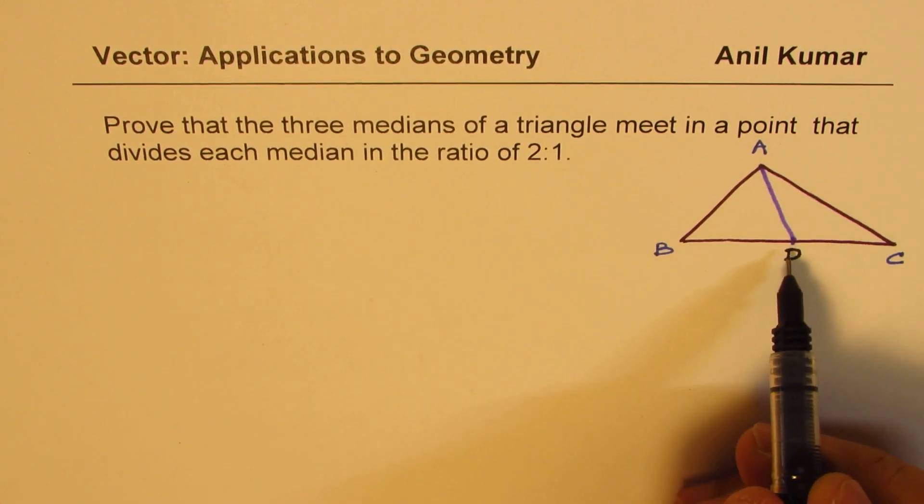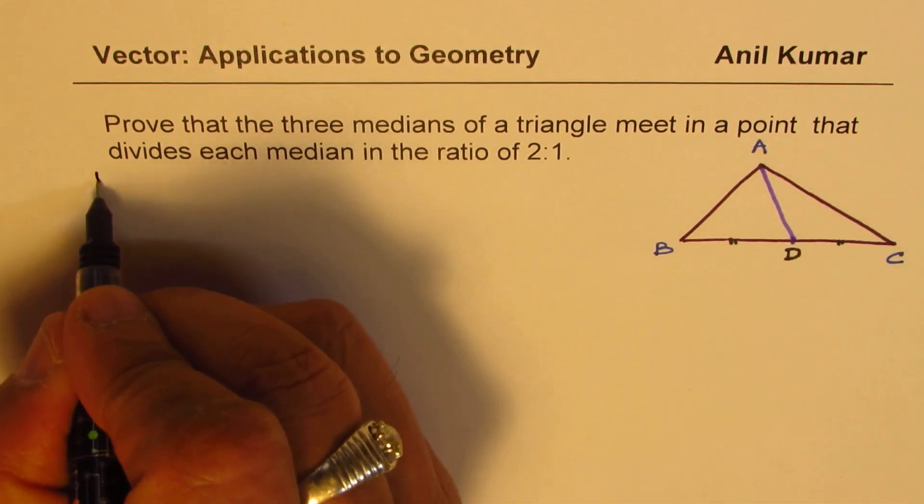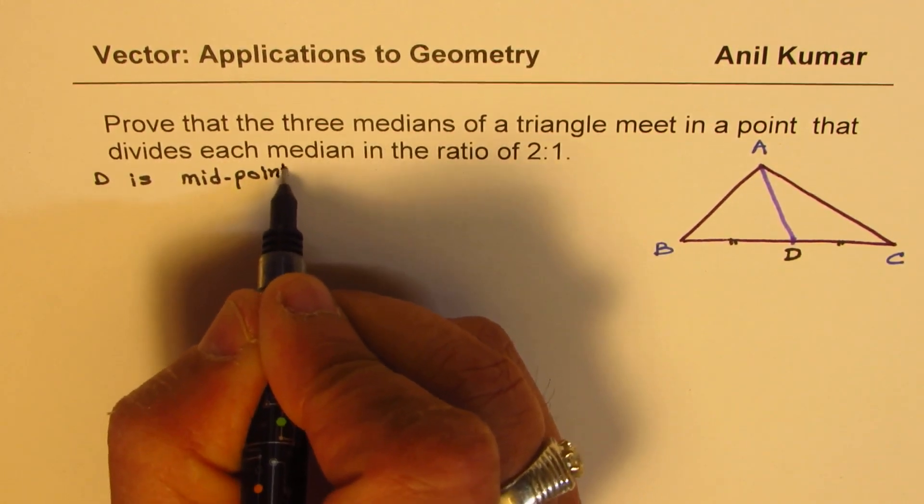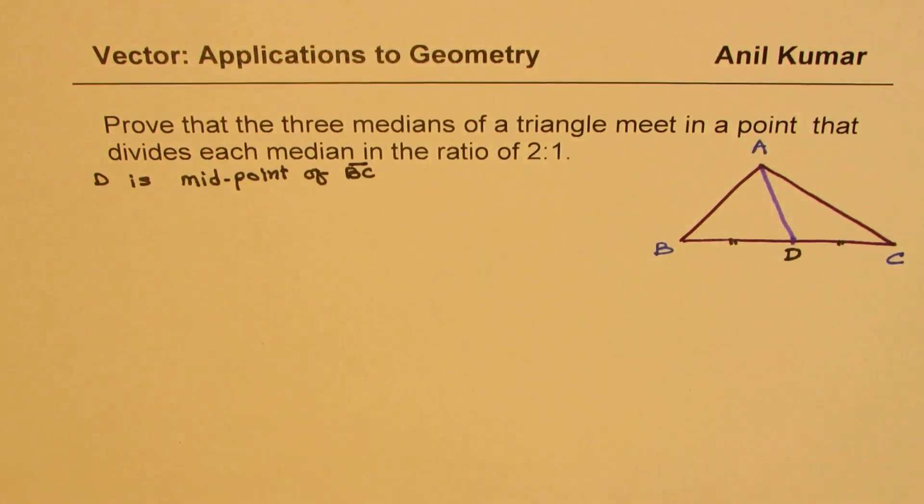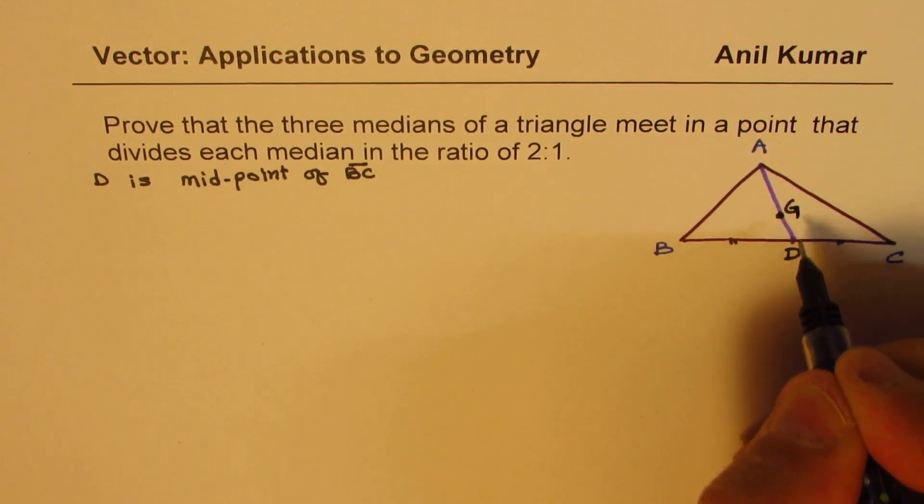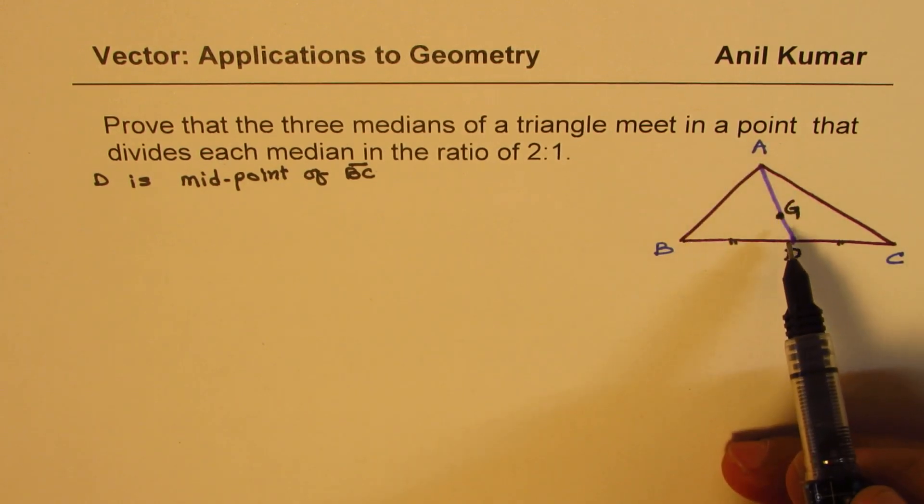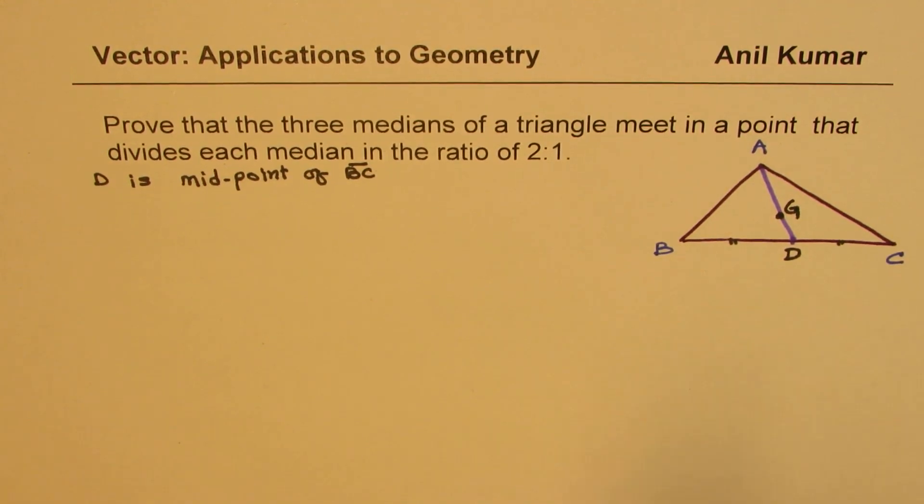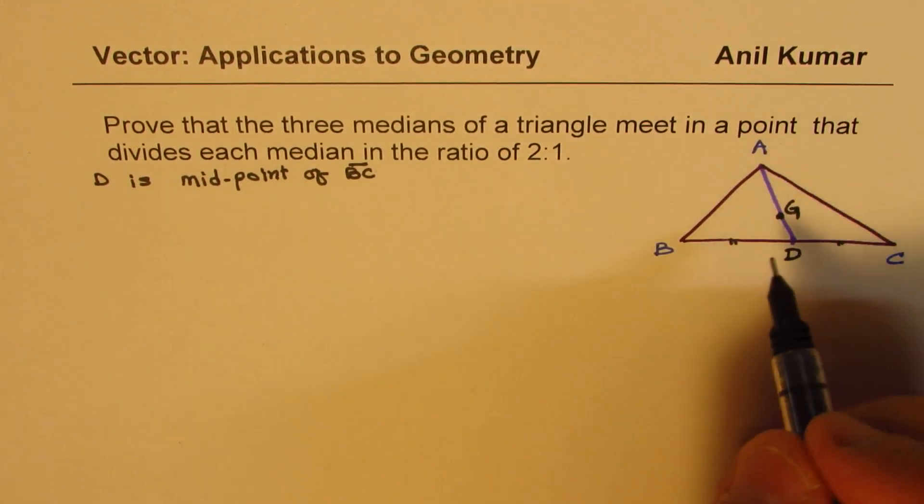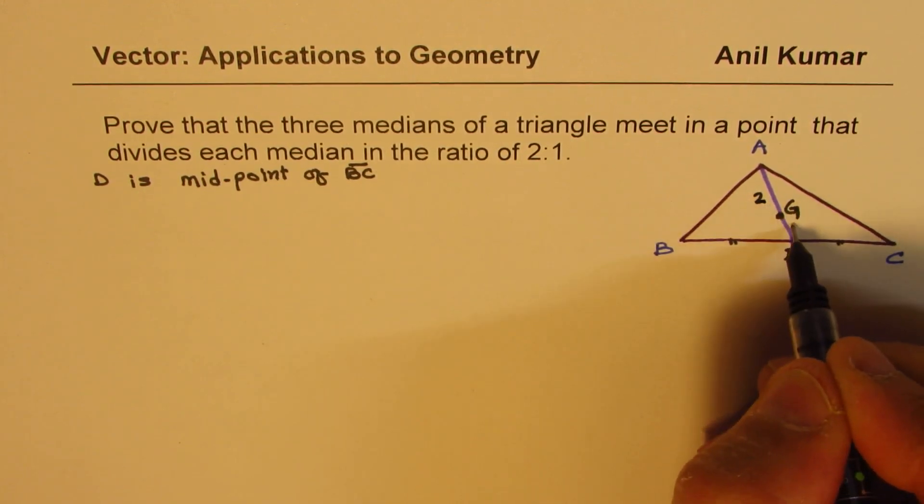Since D is a midpoint we know BD equals DC. Now we have taken D as the midpoint of BC. Join A to D and take a point on AD which we'll call G. G is for gravity - this point is also called centroid and therefore normally for centroid we write G. The center of gravity actually acts at this point.